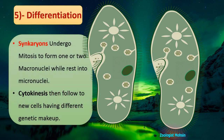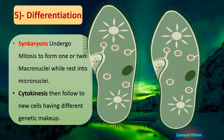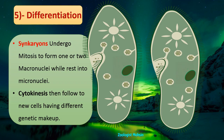These syncarions then undergo mitosis to form one or two macronuclei, while the rest become micronuclei. A few syncarions differentiate into macronuclei while the rest become micronuclei, depending on the need and the type of organism. After this differentiation, cytokinesis follows to produce new cells with different genetic makeups.